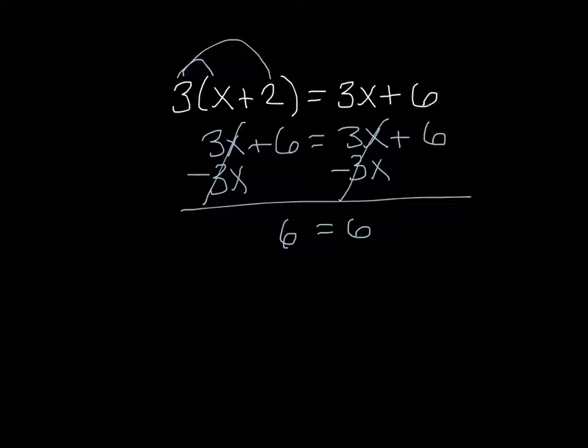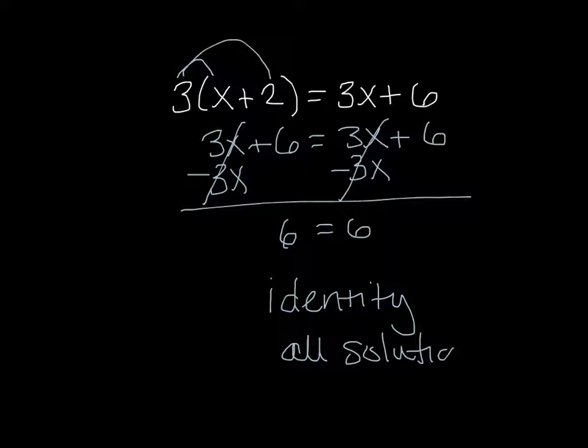Now you have to ask yourself, is it true that 6 equals 6? And yes, it is. And what that means is, this is an identity problem, so you can say identity as your answer, or you can say all solutions. Now we can't say that x equals anything, because you'll notice that x completely disappeared. It's not there anymore. They've canceled out both places. So it's not going to be x equals something. What it means is, I can take any number and plug it in for x, and it's going to be true all the time. There's not just one answer. All things are the answers.